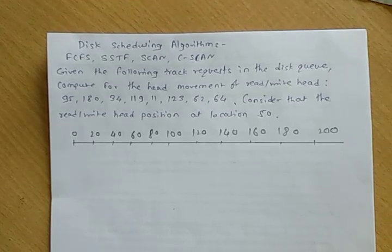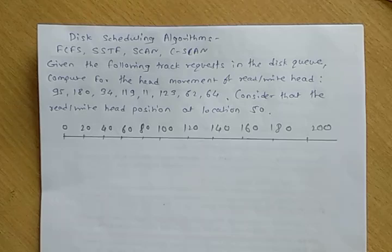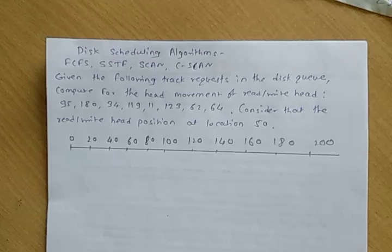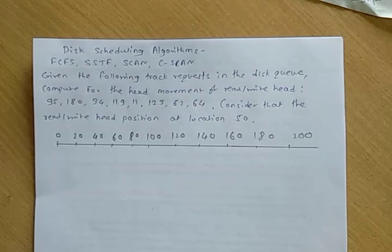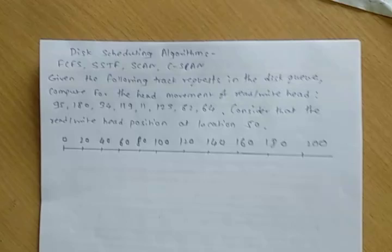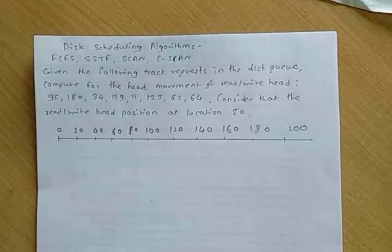Next is the disk scheduling algorithm. In disk scheduling, we have to calculate the seek time. Seek time means the time required to move the read/write head from one location to another. There are different disk scheduling algorithms: FCFS, SSTF, SCAN, and C-SCAN. FCFS is First Come First Serve, SSTF is Shortest Seek Time First, SCAN algorithm, and C-SCAN means Circular SCAN algorithm.